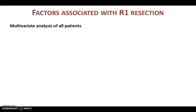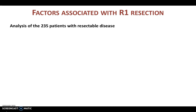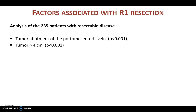When the authors analyzed various CT factors on multivariate analysis, the NCCN CT resectability criteria correlated with R0 versus R1 resection margins, and tumor size greater than 4 cm was also significantly associated with an R1 resection margin. More importantly, among the 235 patients with resectable disease analyzed separately, tumor abutment of the portal-mesenteric vein was associated with a significantly higher incidence of an R1 resection margin — along with tumor size greater than 4 cm. It is important to note that currently, per NCCN criteria, tumor abutment of the portal-mesenteric vein is considered resectable disease.